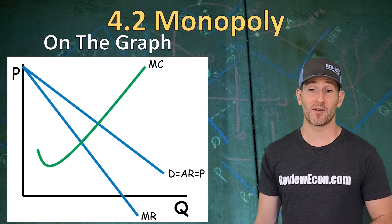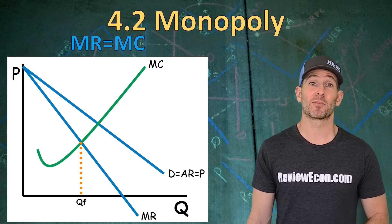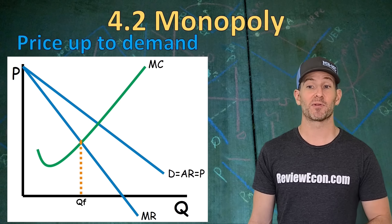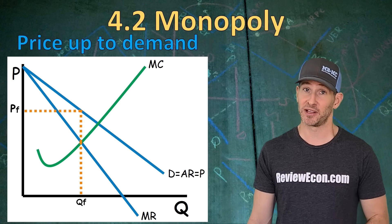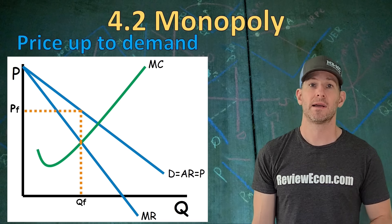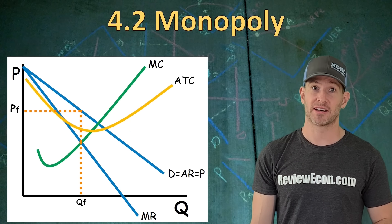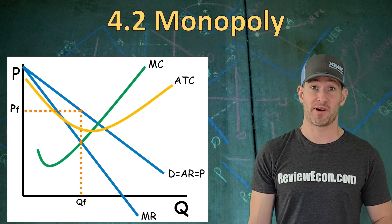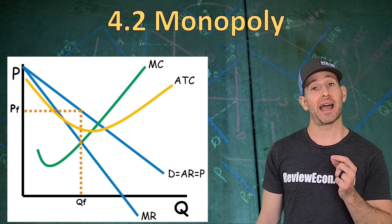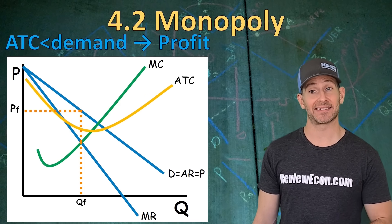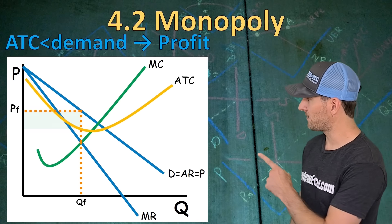The graph we saw earlier is the monopoly graph. Here we have our marginal cost, demand, and marginal revenue. This firm is going to produce where MR equals MC — that is our profit maximizing quantity. They will price all the way up to demand because that demand curve is the maximum people are willing to pay for that quantity. Now we can add in our average total cost curve. The location of that average total cost curve tells us whether or not this firm is making an economic profit. In this case, at the profit maximizing quantity of QF, the average total cost curve is less than the demand, meaning this firm is earning an economic profit — that economic profit is that box right there.